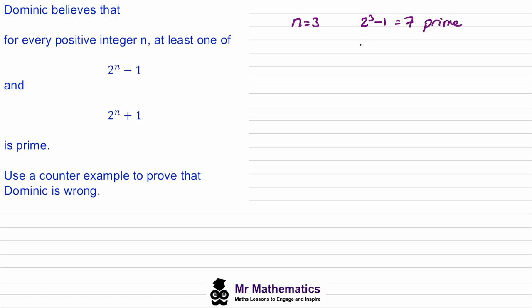So we don't need to try 2 to the n plus 1, as we know n equals 3 satisfies the statement. If we try n equals 4, we've got 2 to the 4 minus 1, so 16 minus 1 is 15, and 15 is not prime. But if we try 2 to the 4 plus 1, we get 16 plus 1, which is 17, and this is prime.